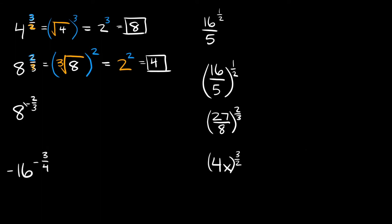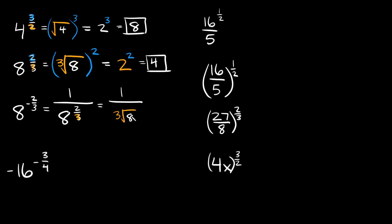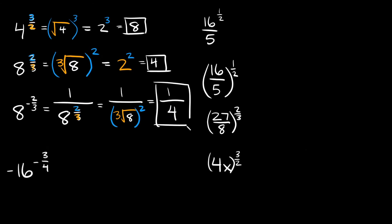Now we have 8 raised to the negative two-thirds power. The negative exponent means this equals 1 over 8 to the positive two-thirds. Since there's a 3 in the denominator, we take the cube root of 8, which is 2, and raise it to the second power. So we get 1 over 2 squared, which is 1 over 4.